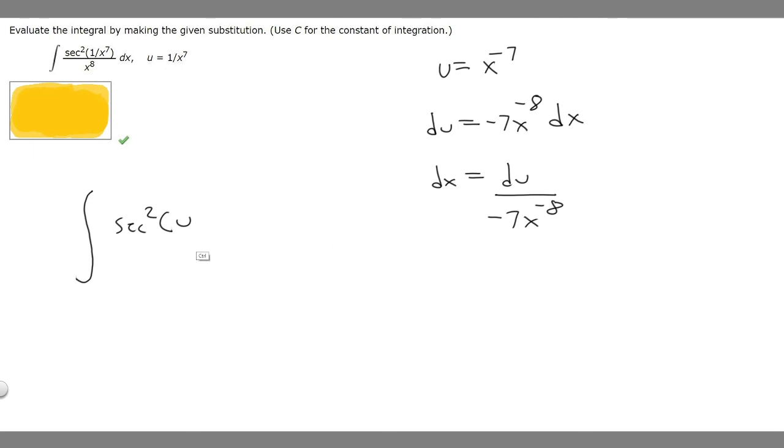Then 1 over x to the 8 is the same thing as x to the minus 8. So we can just rewrite this as x raised to the minus 8 times the secant squared of u, and that's just simplifying what's right here.